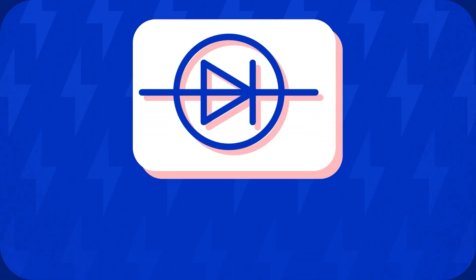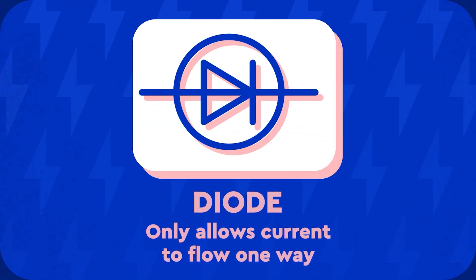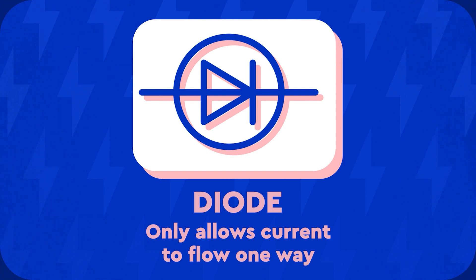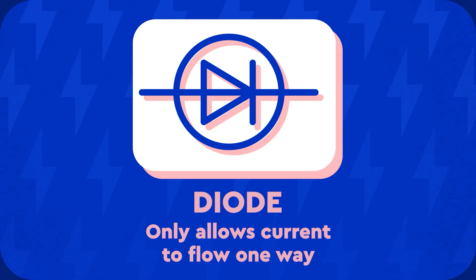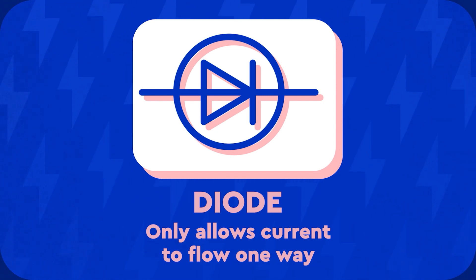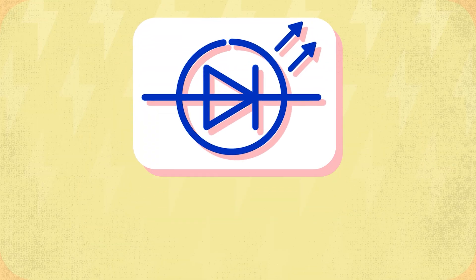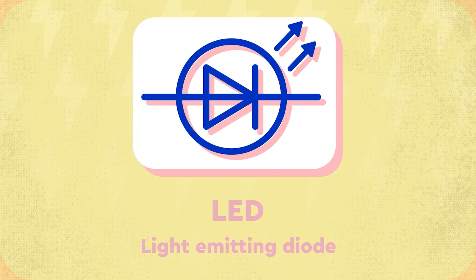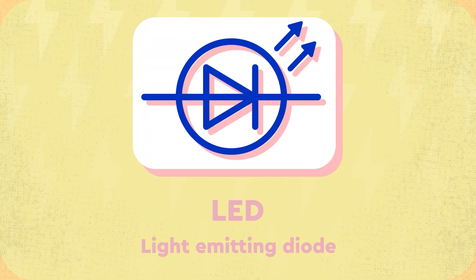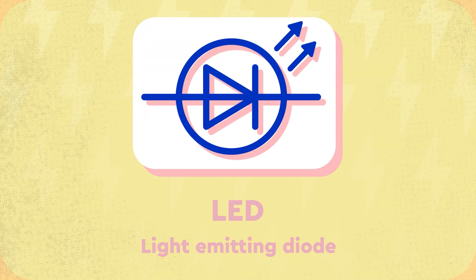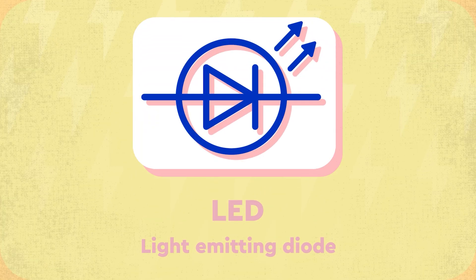This is a diode. It only allows current through in one direction, and it is used to convert alternating current to direct current. An LED, or light emitting diode, is a diode that produces light.